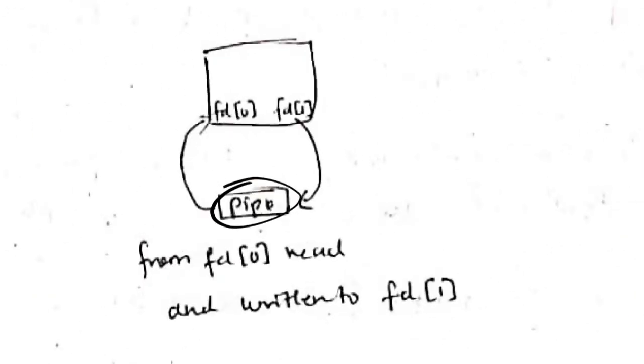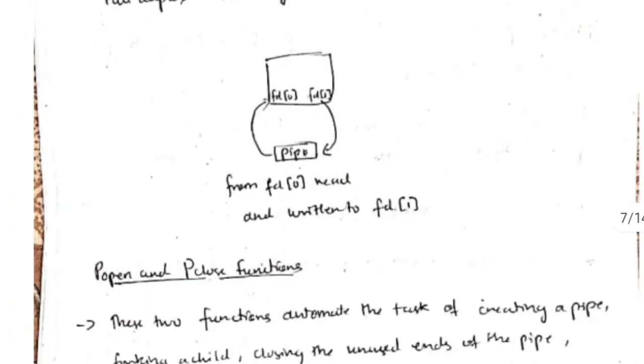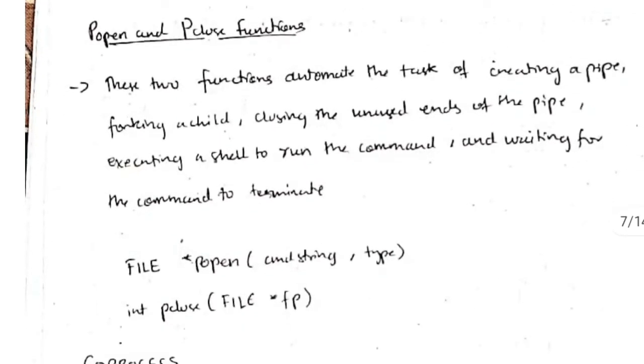We have a pipe here which is a temporary buffer and the data will be read from fd of 0 and it will be written to fd of 1. We have popen and pclose functions which make the automation faster, like the process of creating a pipe, forking a child, closing the unused ends of the pipe, and so on. These are the syntax for file open and file close.